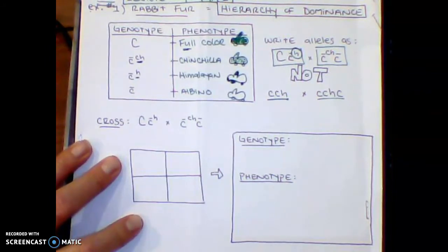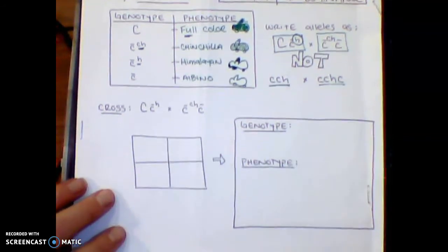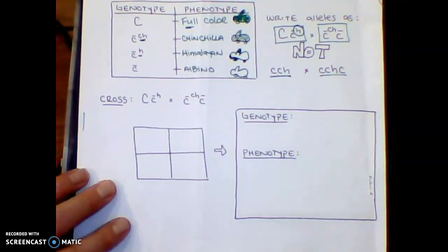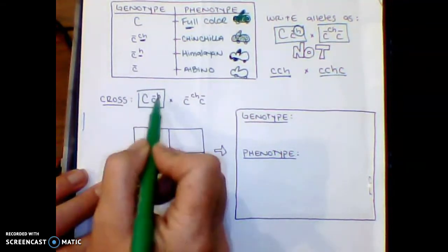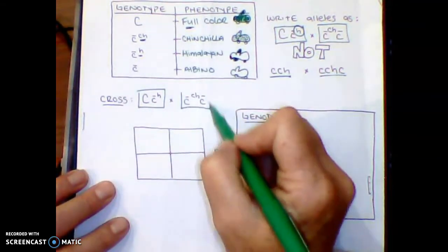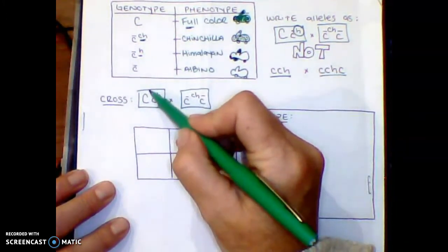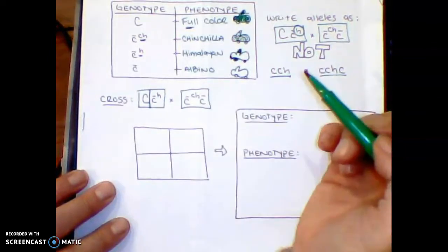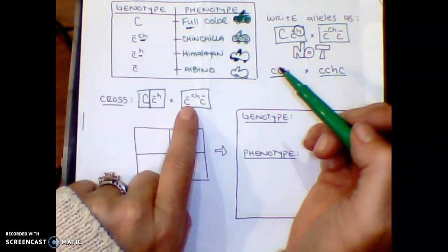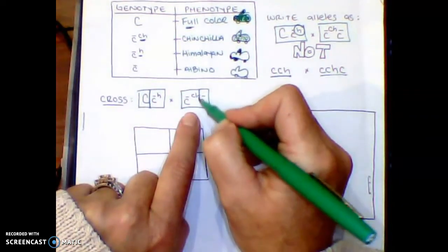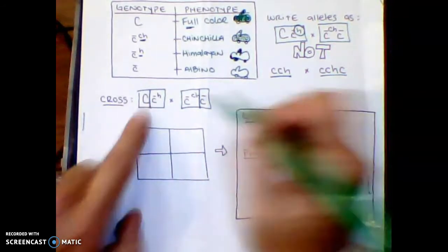All right, so let's do an example of this type of multiple allele combination using a hierarchy of dominance. So here's our parent one, so big C and little c H. Here's our parent two with a little c CH and a little c. Now, if it helps you, put a box around each parent and then slice them in half so you can clearly see the second allele combination.